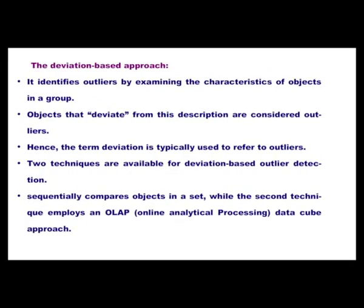The next approach is the deviation-based approach. It identifies outliers by examining the characteristics of objects in a group. Objects that deviate from this description are called outliers, hence the term deviation is typically used to refer to outliers. Two techniques are available: the first technique sequentially compares objects in a set, while the second technique employs an OLAP (online analytical processing) data cube approach.